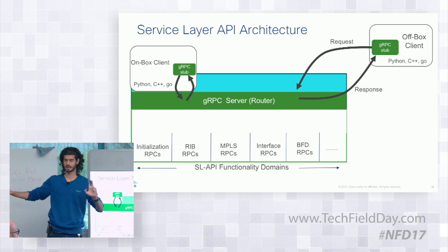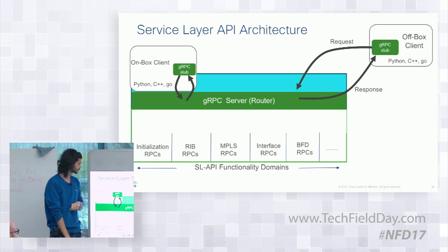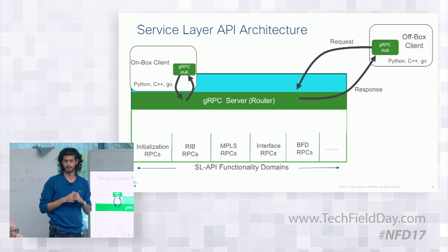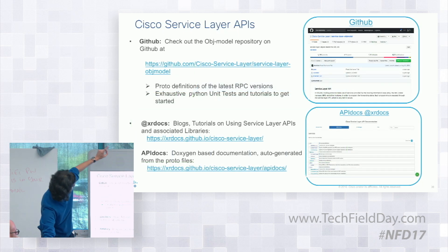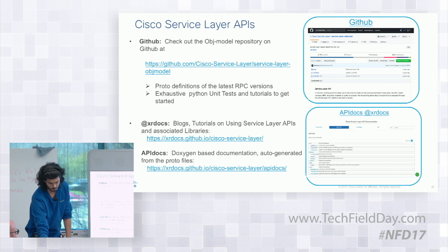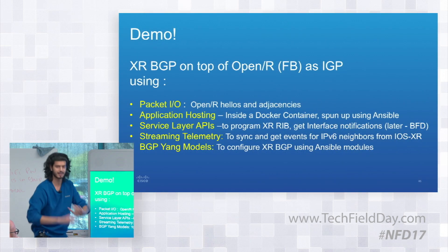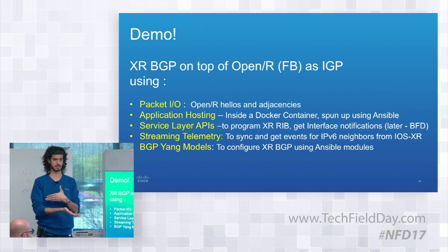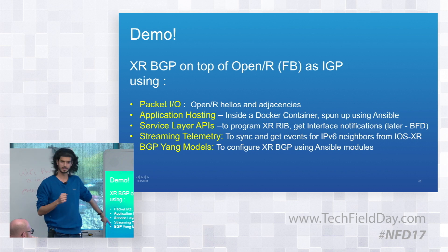The service layer API is available over gRPC, and because it's gRPC-based you can create bindings in Go, C++, Python, and more. Because it's RPC-based, unlike some other vendors, we support both on-box and off-box usage — a protocol running on the box uses gRPC on-box, a controller sitting outside uses gRPC off-box, and your code is identical either way. For the demo, I'm going to run XR BGP on top of OpenR running as an IGP on XR. Think of OpenR as the application I'll spin up — it will utilize packet IO for sending packets, so all adjacencies and hellos go through packet IO.